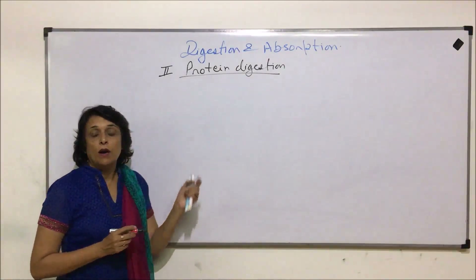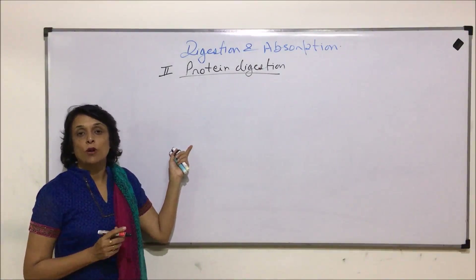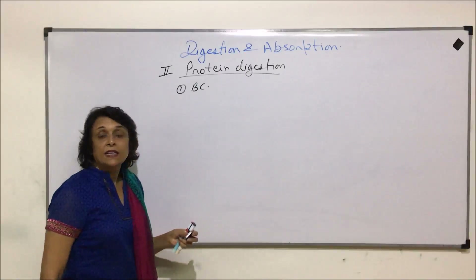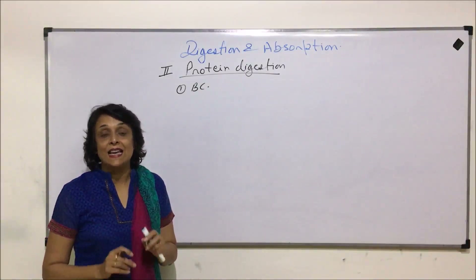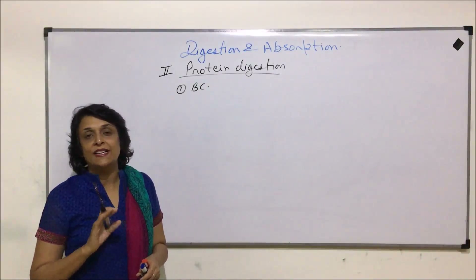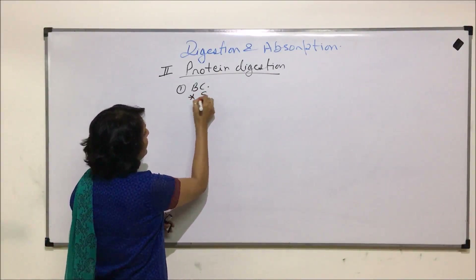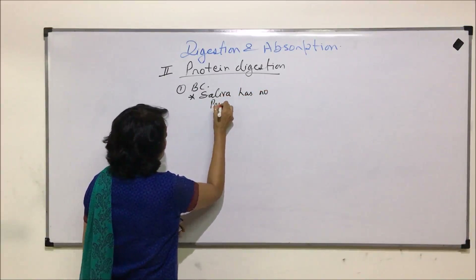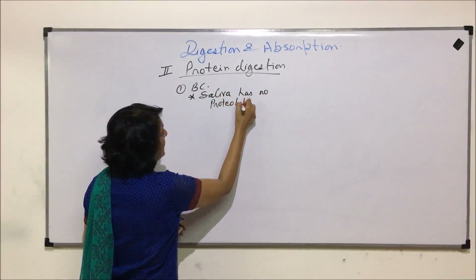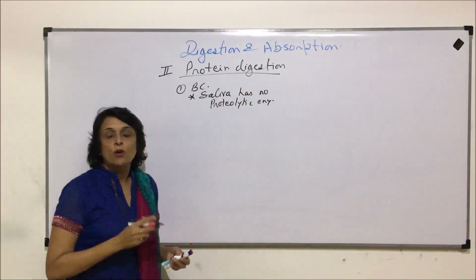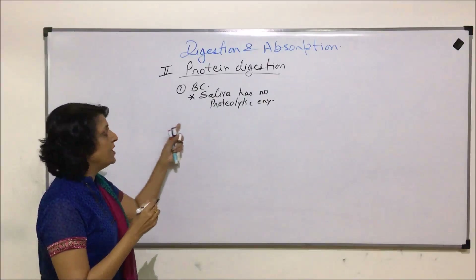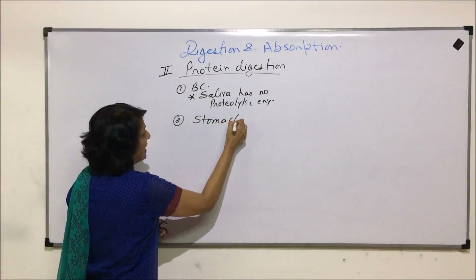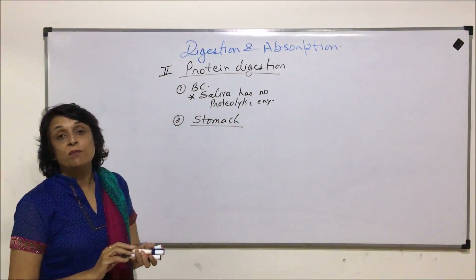We'll go through digestion by location. The first location is the buccal cavity. The buccal cavity produces saliva, and saliva has no proteolytic enzymes, so there is no protein digestion which takes place here.